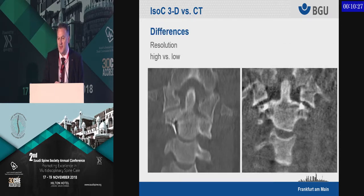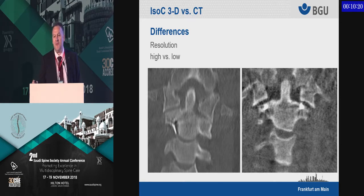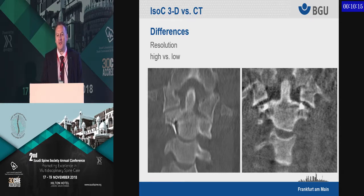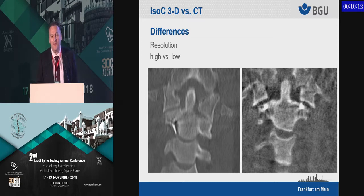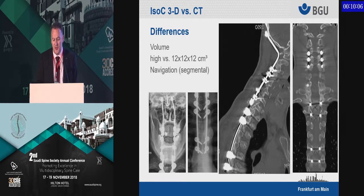But what's the difference? The difference is resolution. The image with higher quality comes from the CT scanner, and the other comes from the 3D fluoroscopy. There is definitely a difference in resolution between these two imaging technologies.